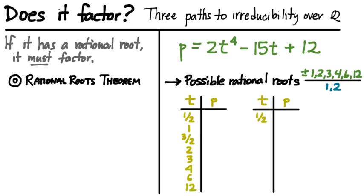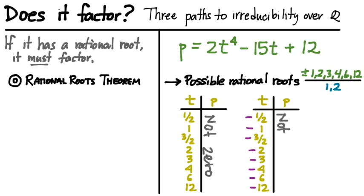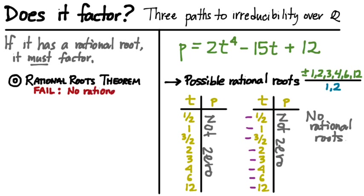For this polynomial, we could try all the possible combinations of a divisor of 12 divided by a divisor of 2. By exhausting all 16 of those possibilities and plugging them into p, we find that none of them equals 0. So this particular polynomial has no rational roots. This polynomial has failed the rational roots test — therefore it doesn't automatically factor with a term of degree 1 in it.